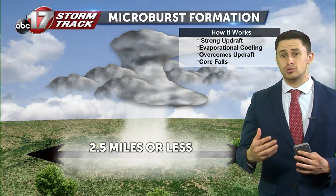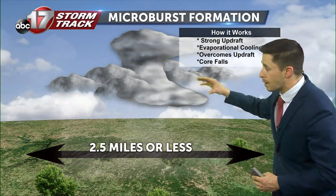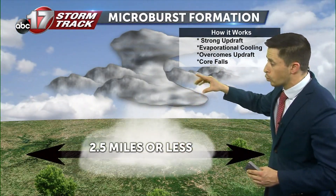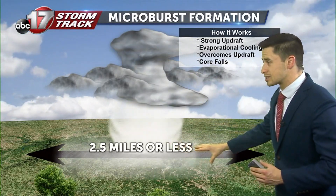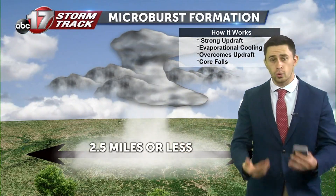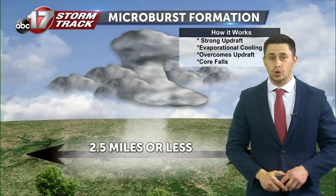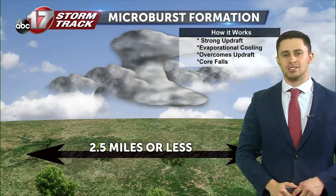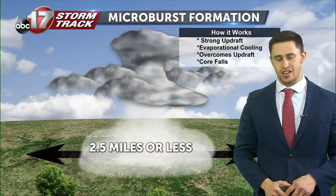Once that updraft is killed, a lot of it will fall back down to the surface of the earth. That's going to force all the cooler air with it, and it'll start to expand back out. That core will fall, and you'll see very localized areas of damage. I'm ABC 17 StormTrack meteorologist Chance Koch.